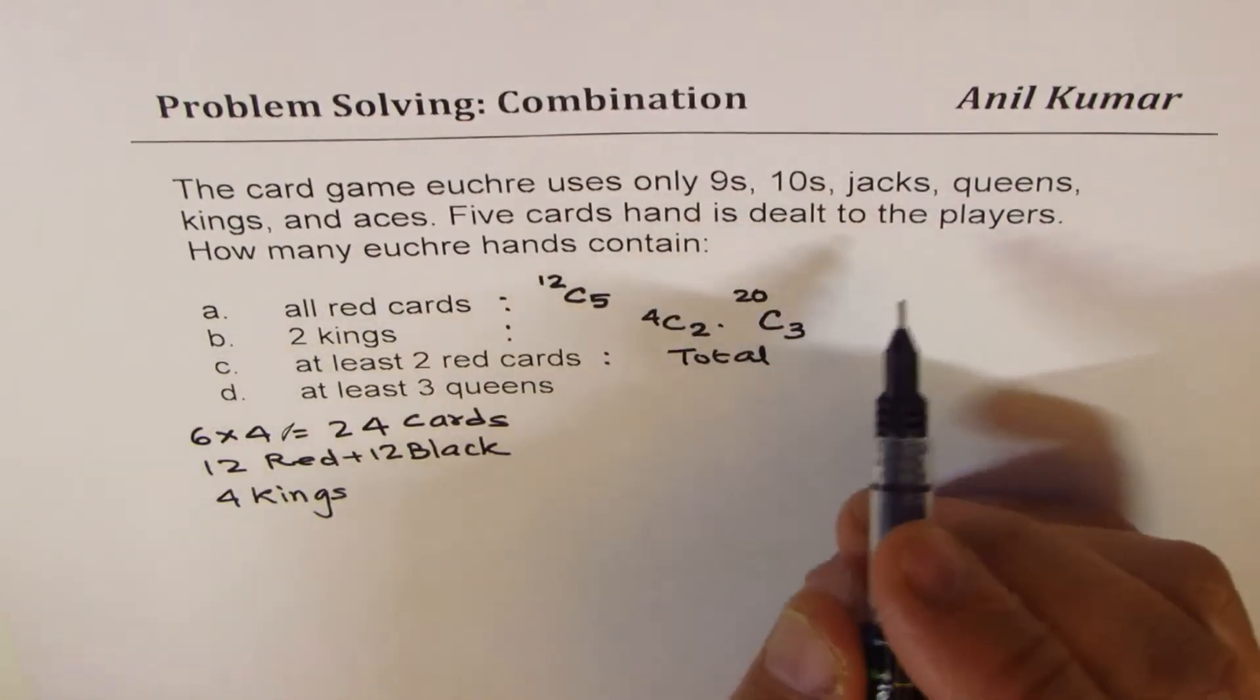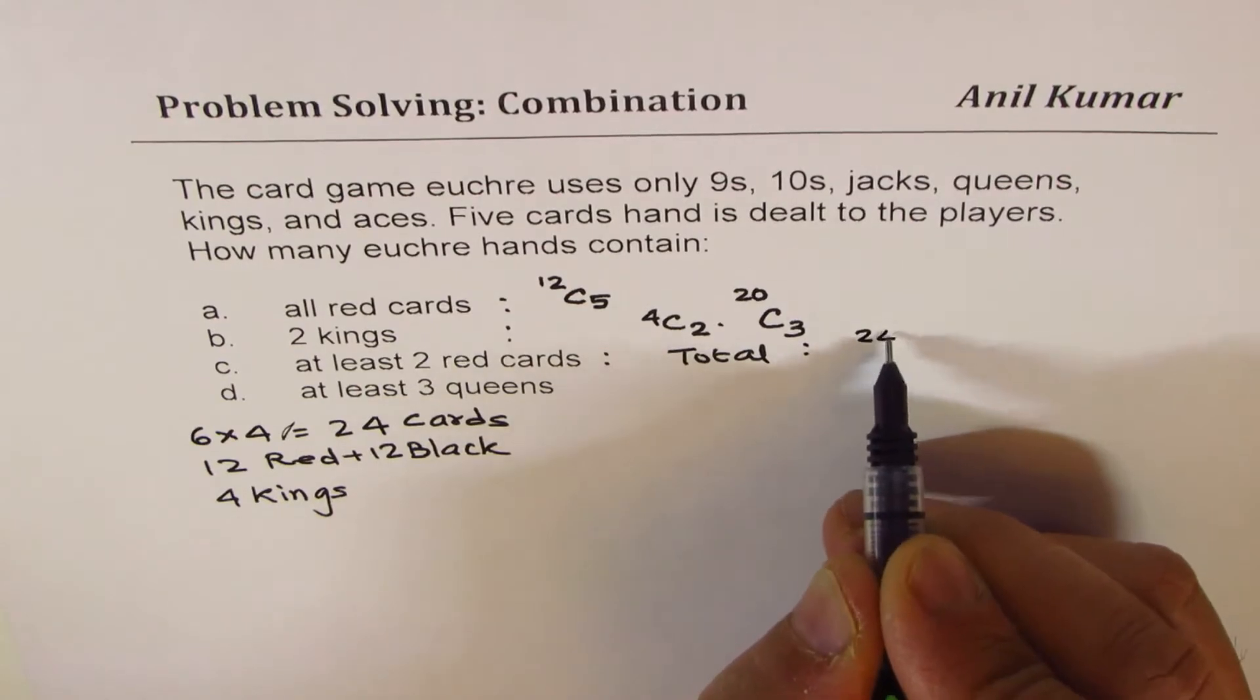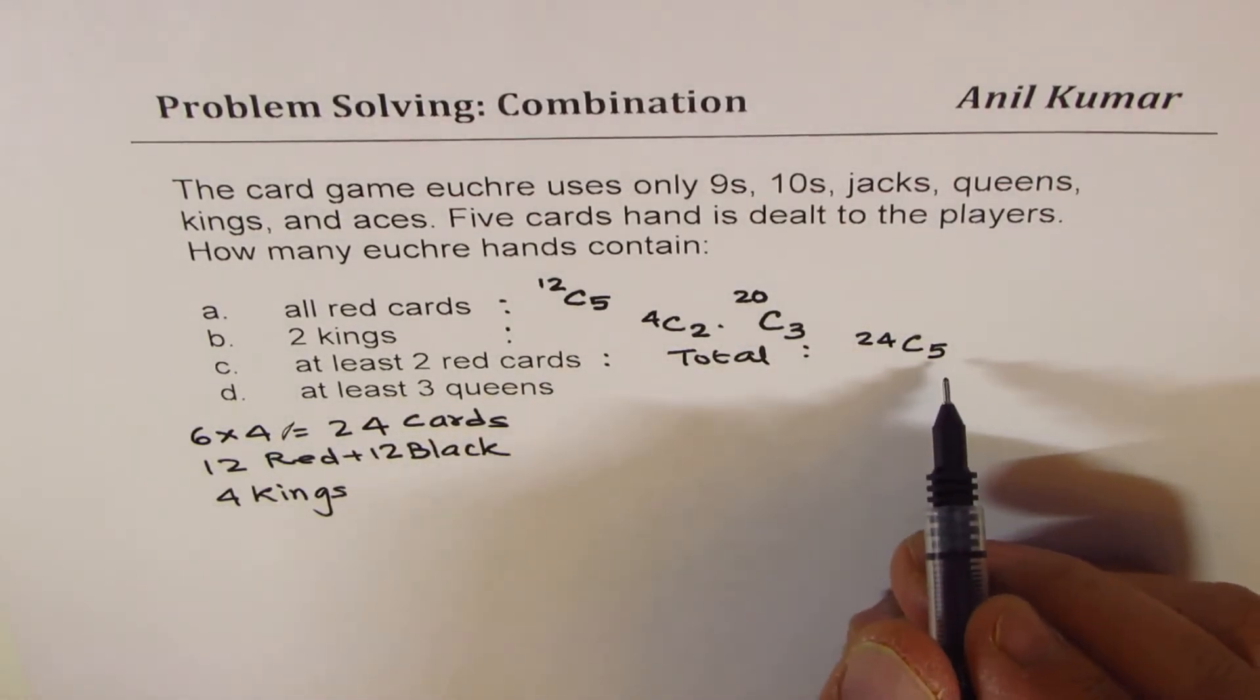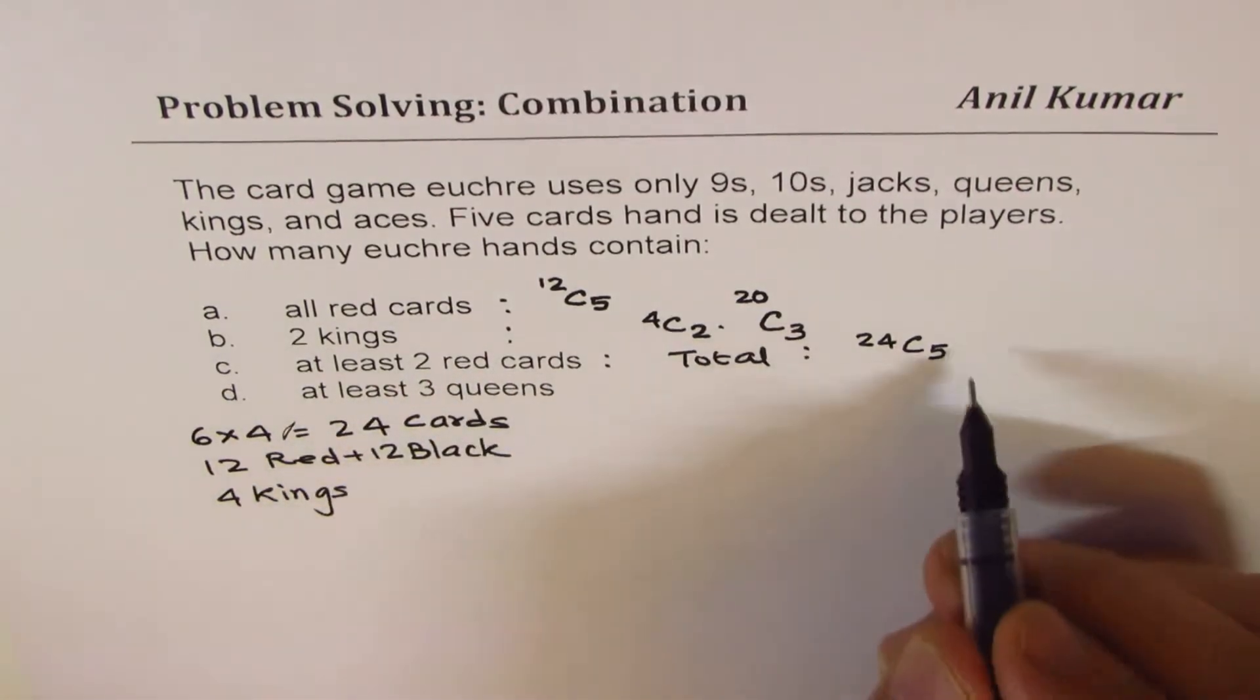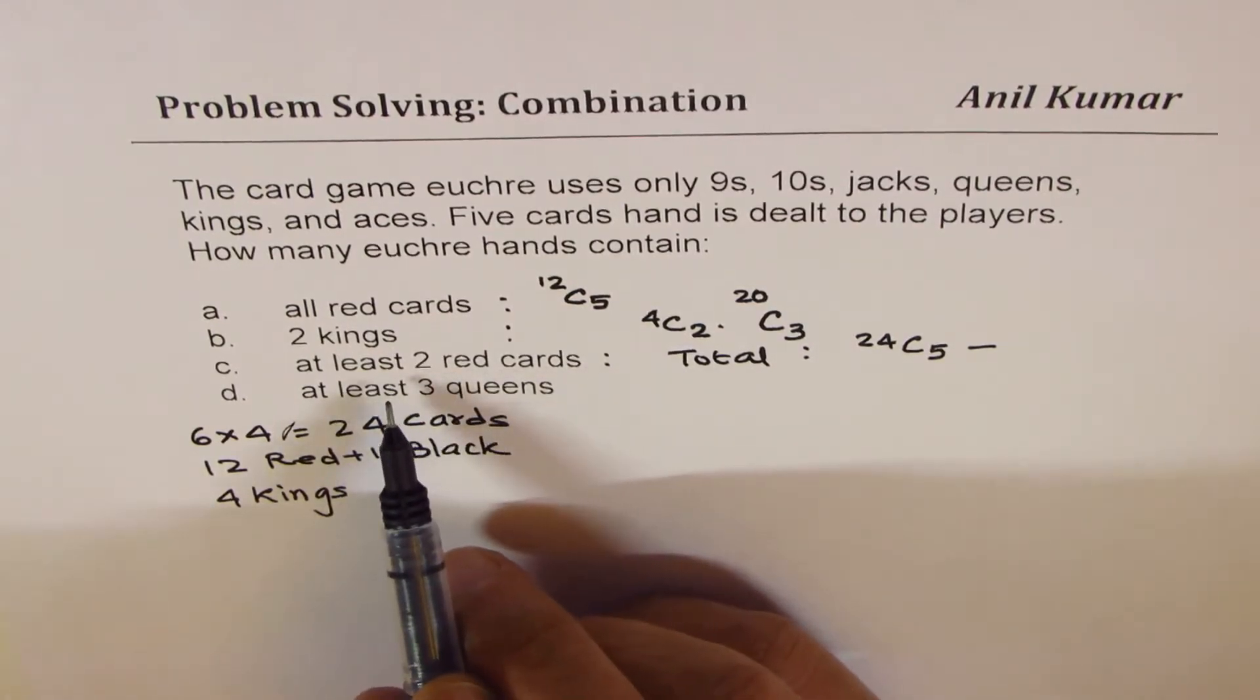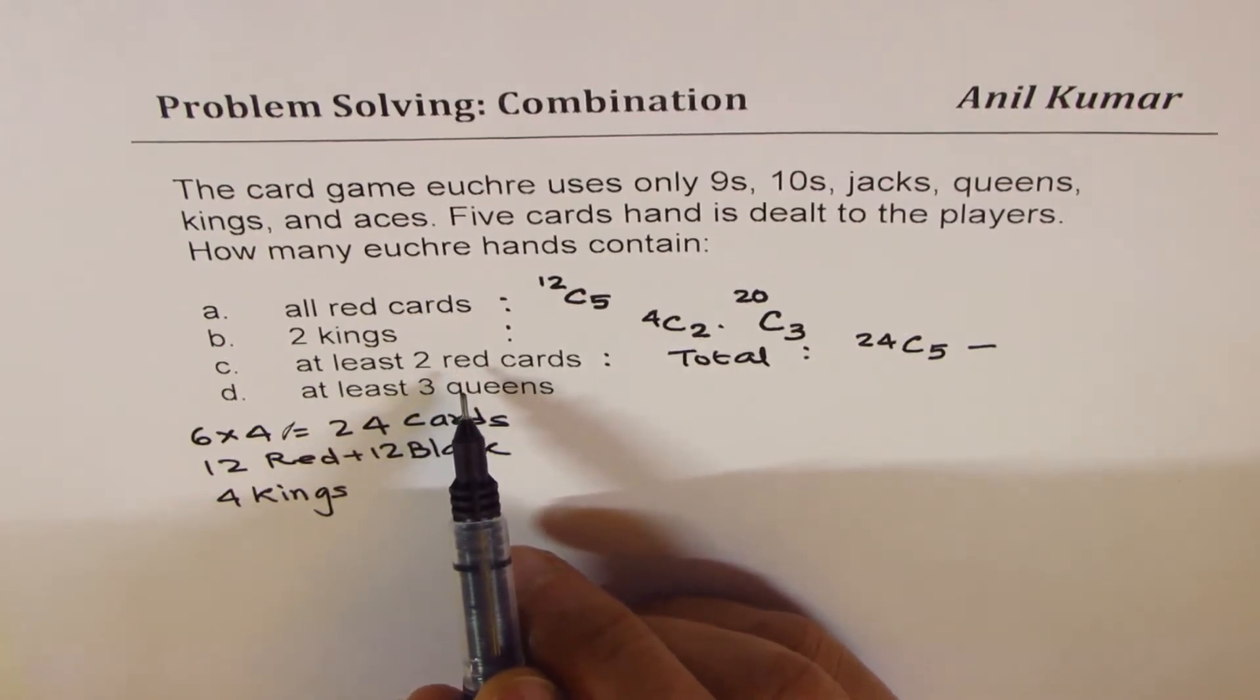So total of five out of 24 is from 24, the combinations is five. This is total number of combinations. And from this total, let us take away, they are saying at least two red cards. So let's take away zero red card and one red card.